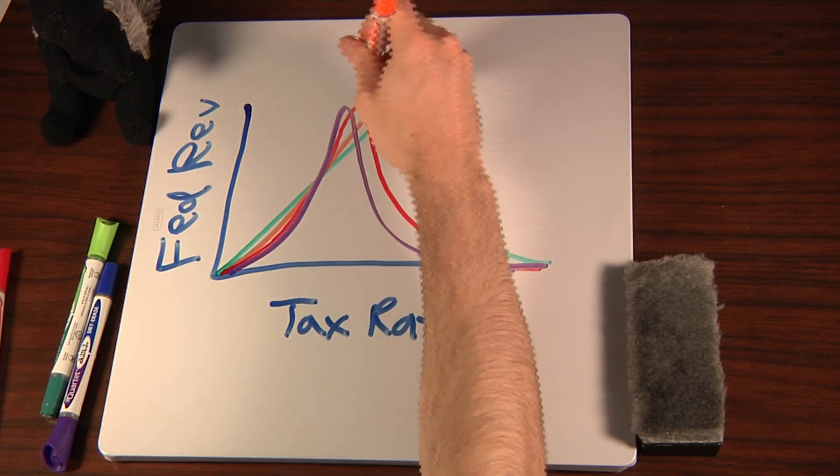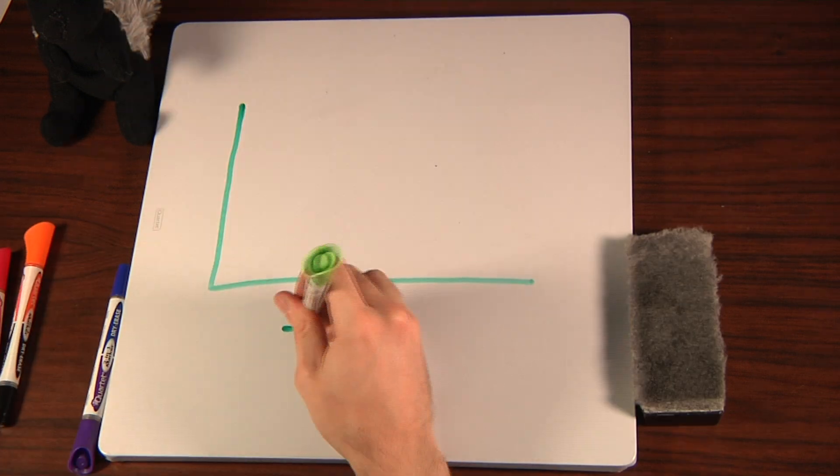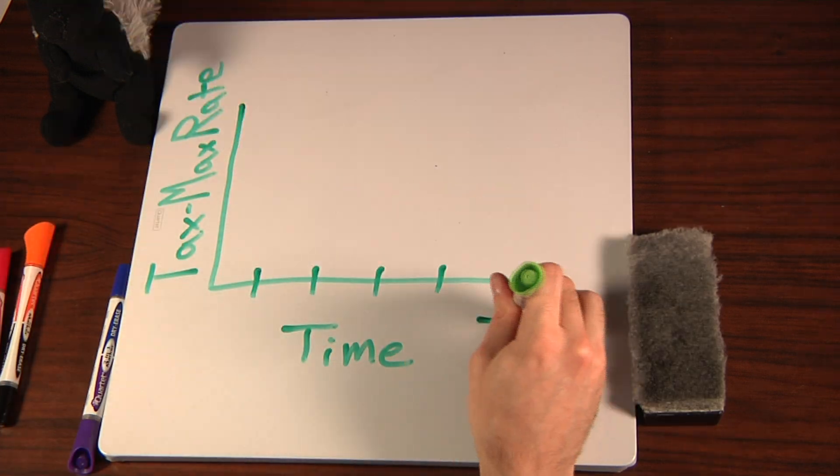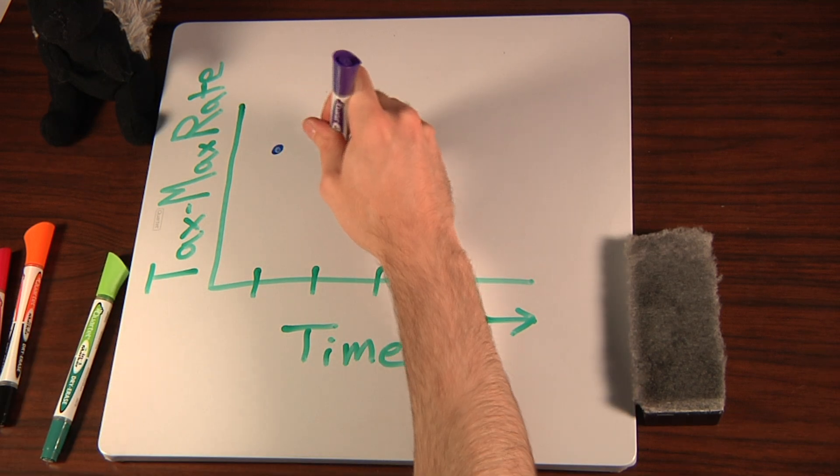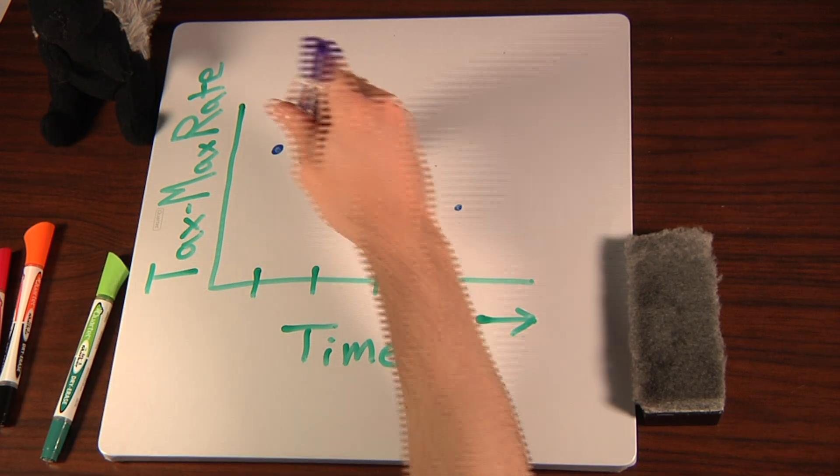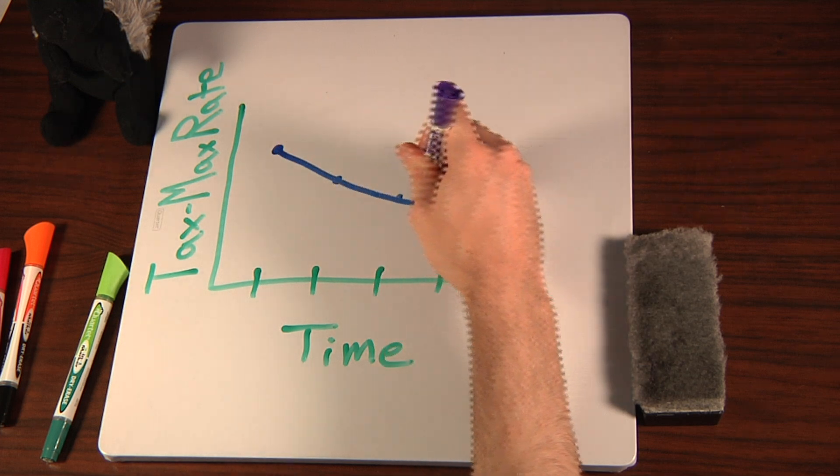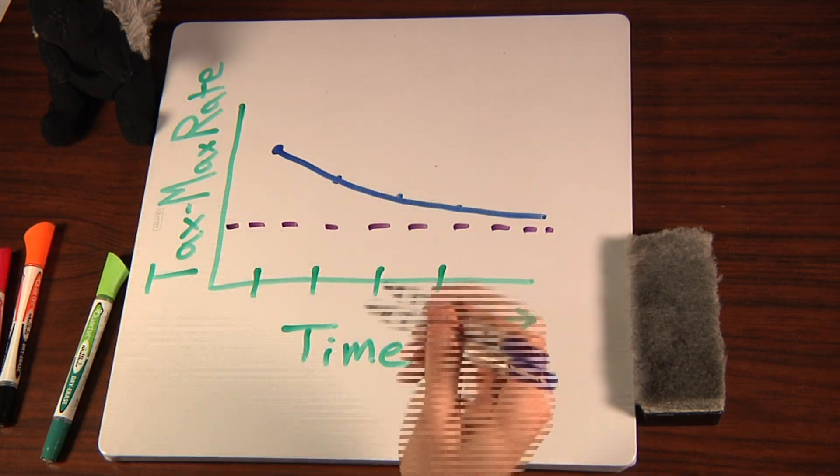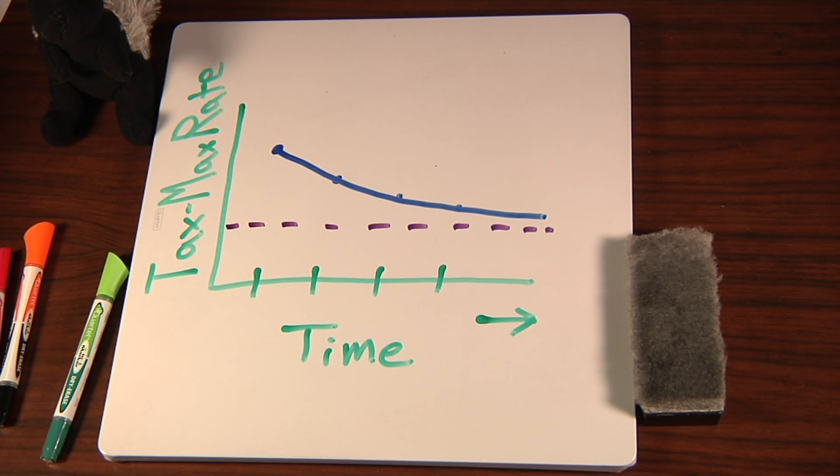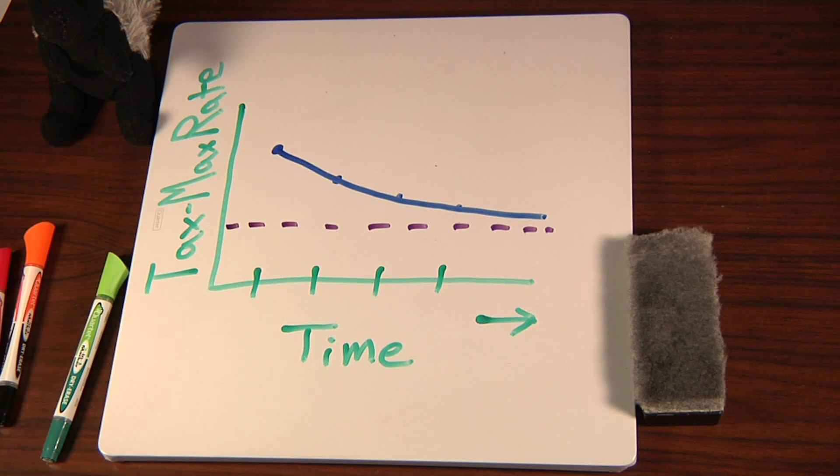Anyway, we can take all these tax maximizing points and plot them on a curve, a curve of curves. 10 years out was maybe here, 20 years was lower, 30 a bit lower, and there's a limit at the growth maximizing rate. So there's not just a Laffer curve, there's a Laffer curve for every time frame, infinite Laffer curves.